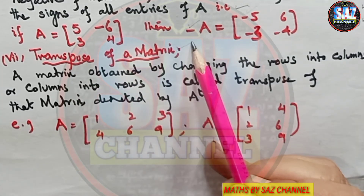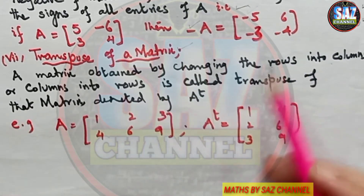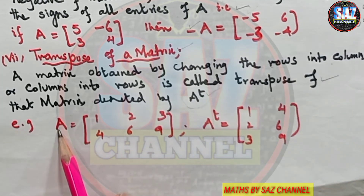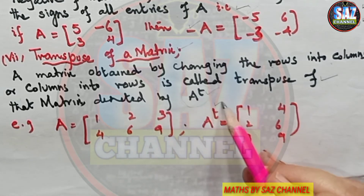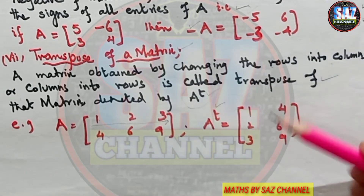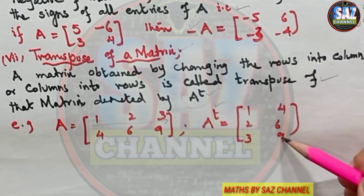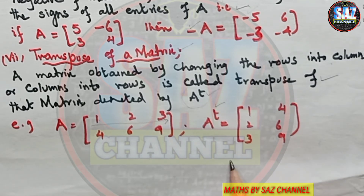The next concept is the transpose of a matrix. A matrix obtained by changing the rows into columns or the columns into rows is called the transpose of the matrix, denoted by A raised to the power T. For example, if we have a matrix with rows [1, 2, 3] and [4, 6, 9], the transpose is obtained by shifting each row into a column form.